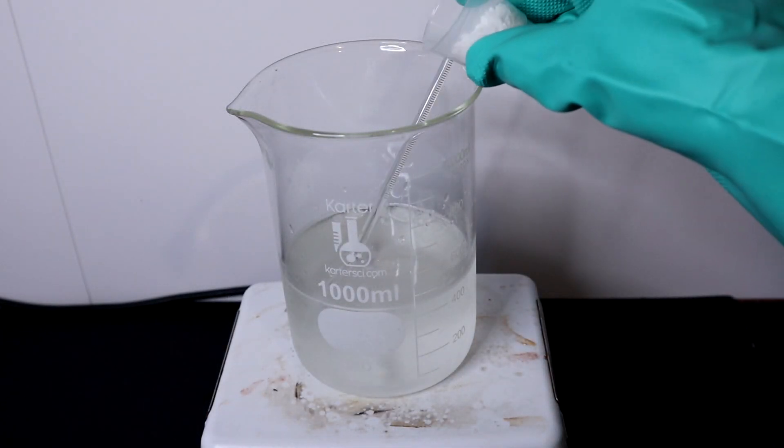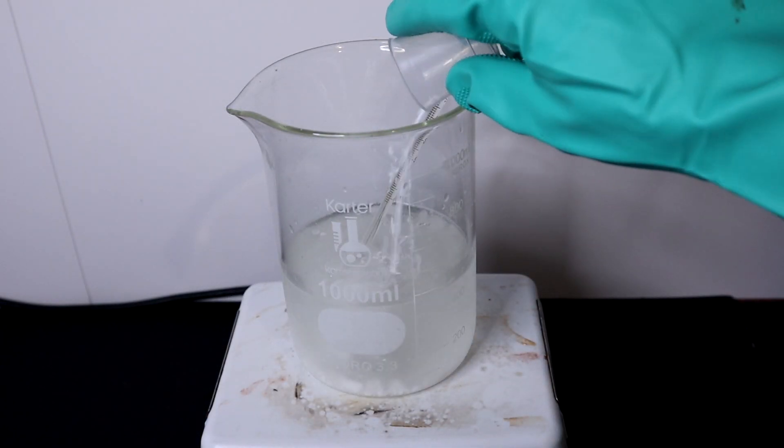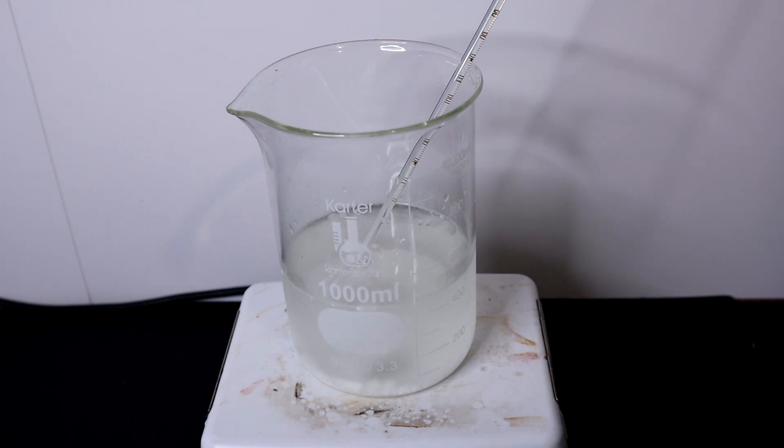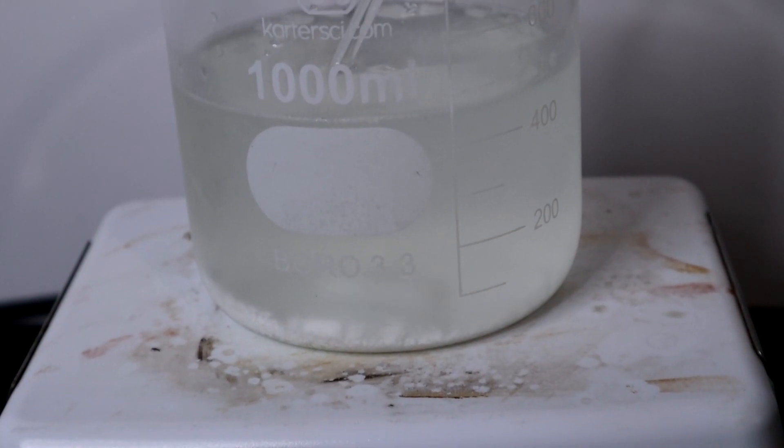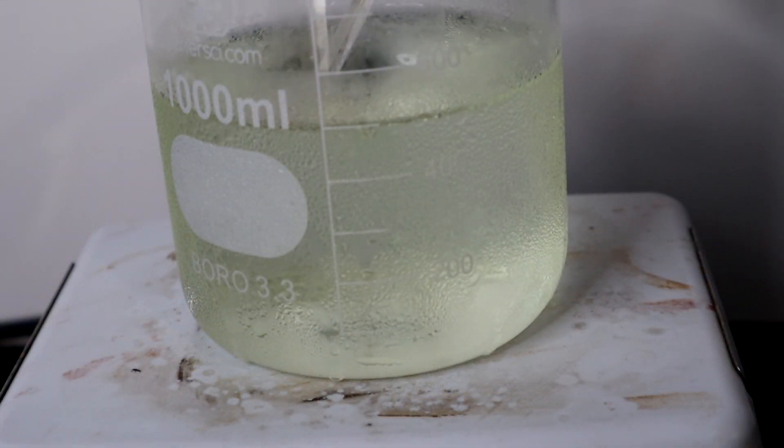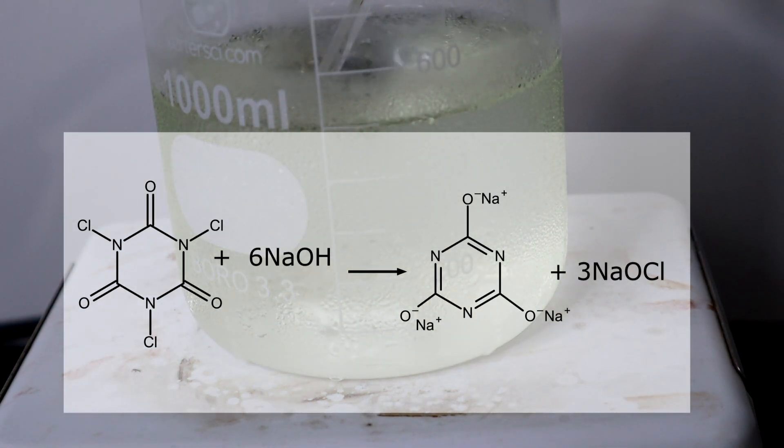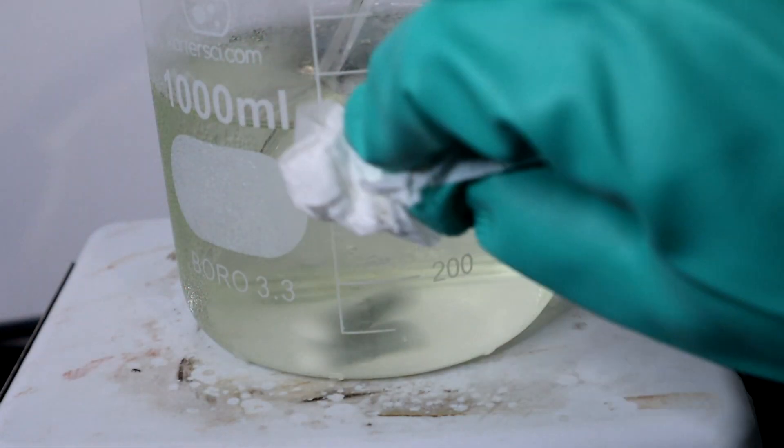After a few minutes of stirring I now add the 15.4 grams of TCCA which slowly dissolves. The solution turns a slight yellow green color. This is due to the reaction between sodium hydroxide and TCCA which generates tri-sodium cyanurate but also sodium hypochlorite, the active ingredient in bleach which is responsible for the color.